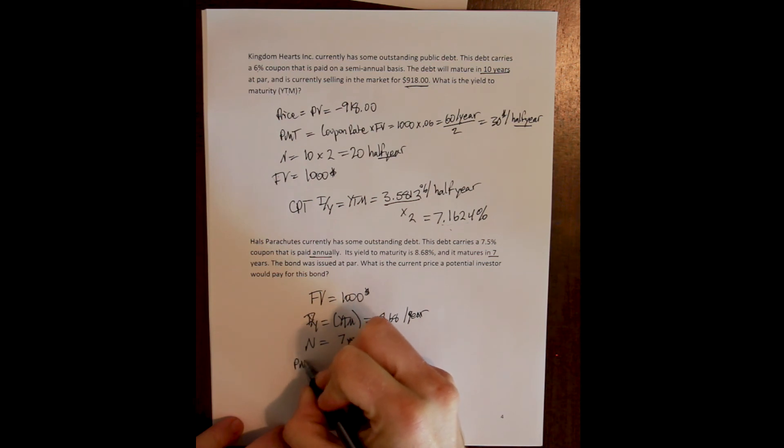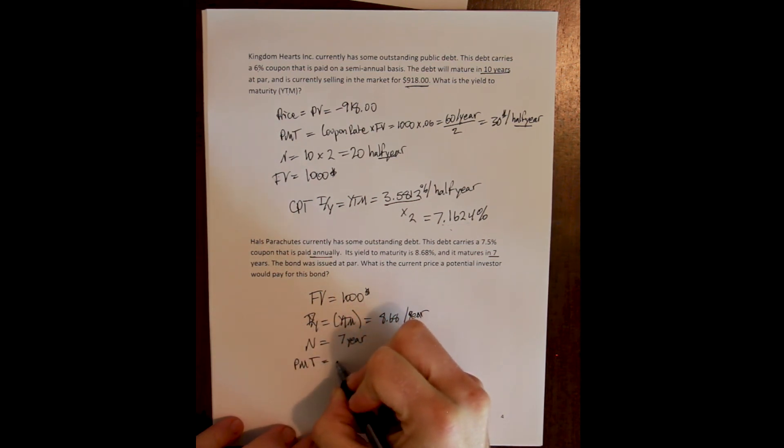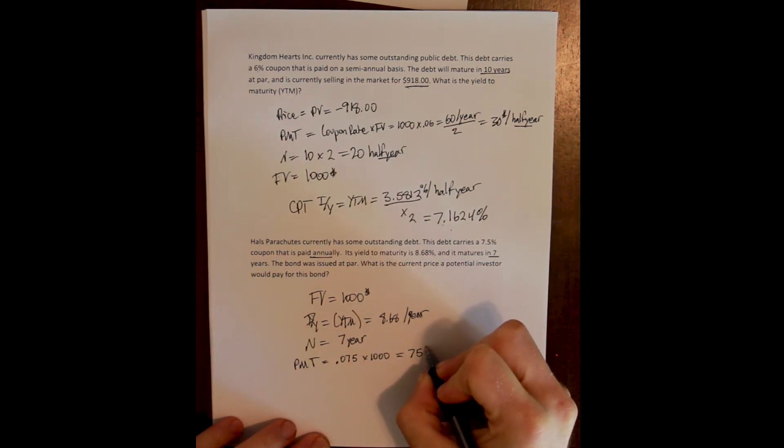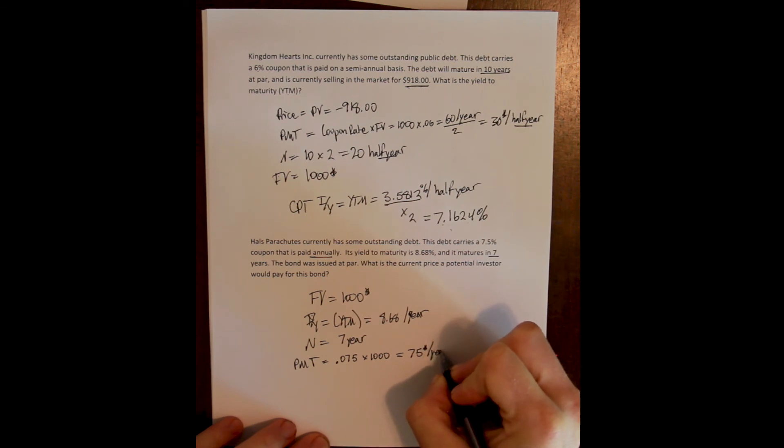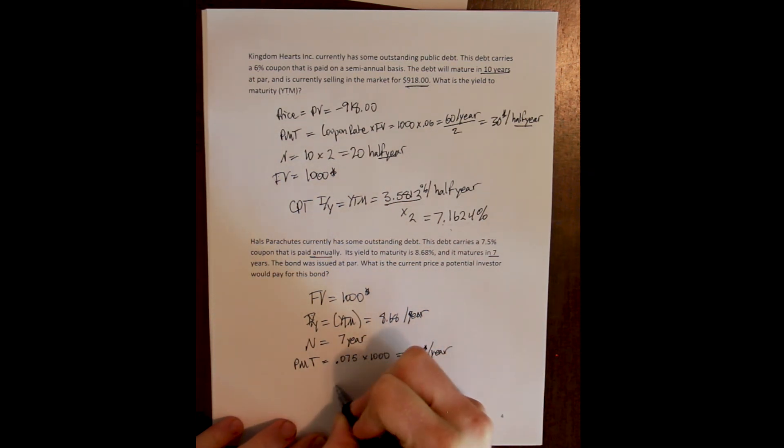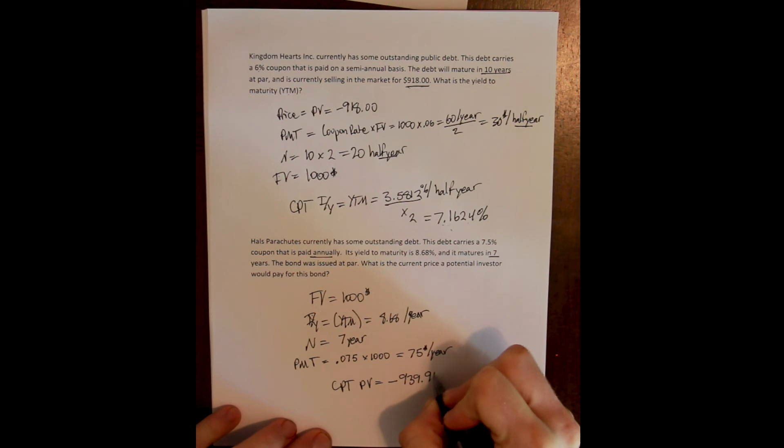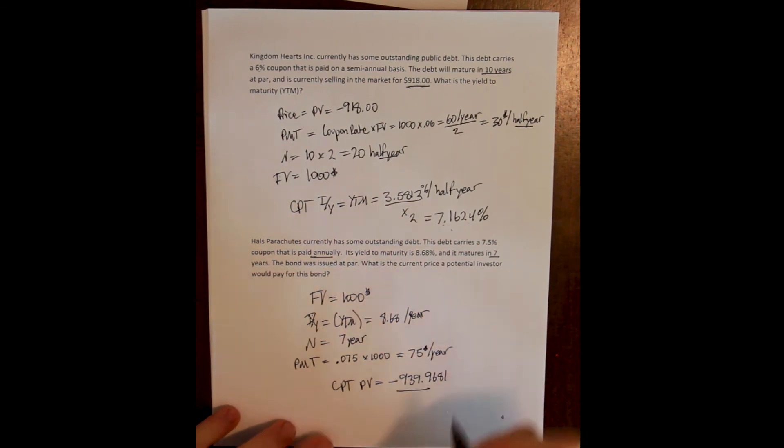Our payment is always our coupon payment, and that is the coupon rate times the face value for a coupon payment of $75 per year. And we compute our present value and we get negative $939.68. So we have a discount bond by about $60.